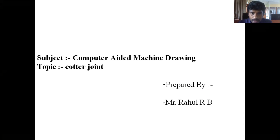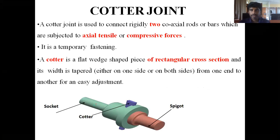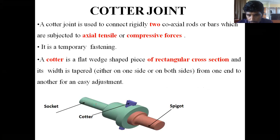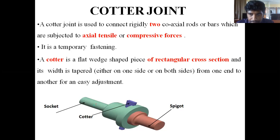Today's topic is the cotter joint. A cotter joint is used to connect rigidly two axial rods or bars which are subjected to axial tensile or compressive forces. These joints are used to connect two axial rods — they may be circular rods, square rods, or bars — which are subjected to tensile or compressive force. It is a temporary fastening, meaning it can be assembled and disassembled very easily and quickly. It is not a permanent fastening.